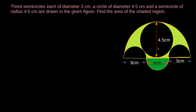This is the circle with 4.5 cm as diameter. This is one semicircle with 3 cm as diameter, another semicircle with 3 cm as diameter, and another semicircle with diameter 3 cm. This is the semicircle with diameter 9 cm. The circle with 4.5 cm diameter is region A, and the other parts are region B, region C, and region D.